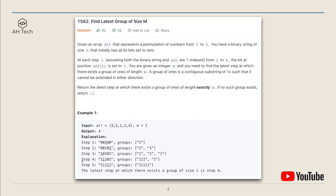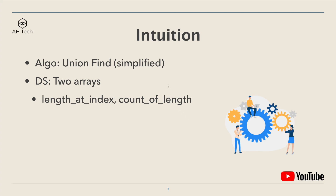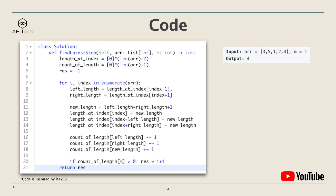The question wants us to return the latest step at which there exists a group of ones with length exactly m. For example, the latest step where a group of length 1 exists is step 4. The algorithm to solve this problem uses a simplified version of union-find. The data structures we use are two arrays: one called length_at_index and the other count_of_length.